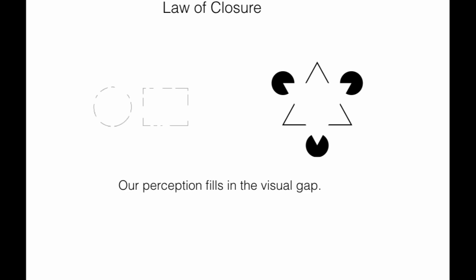To summarize the law of closure, it says that individuals actually perceive objects as shapes, letters, pictures, etc. as being whole when they are really not.